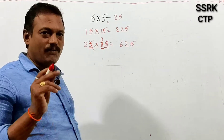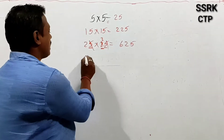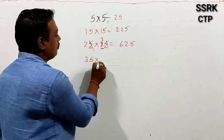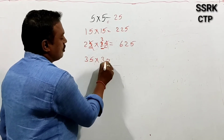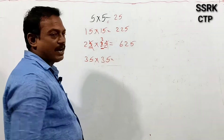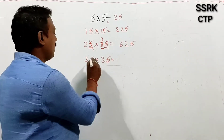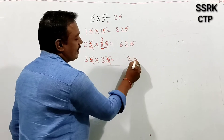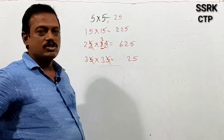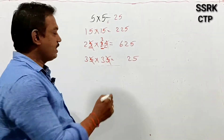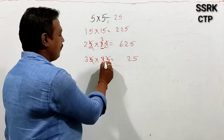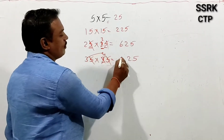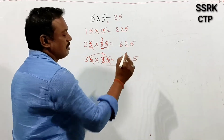The last one ends in 5. For example, we will show 35×35. We show 5×5 is 25. Then 3 after the number is 4, so we will show 3×4 is 12. Result is 1225.